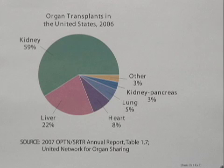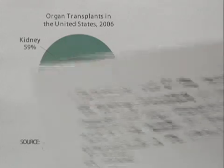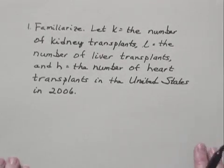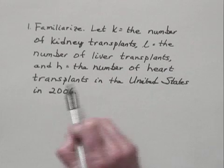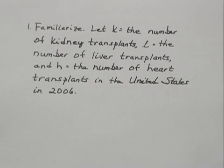So we'll use the five-step problem-solving process to do this, and we'll begin by familiarizing ourselves with the problem. We will make sure that we understand what the problem is asking, and then we'll assign a variable to each of the three things that we're trying to find. So let's let K equal the number of kidney transplants, L equal the number of liver transplants, and H equal the number of heart transplants in the United States in 2006.